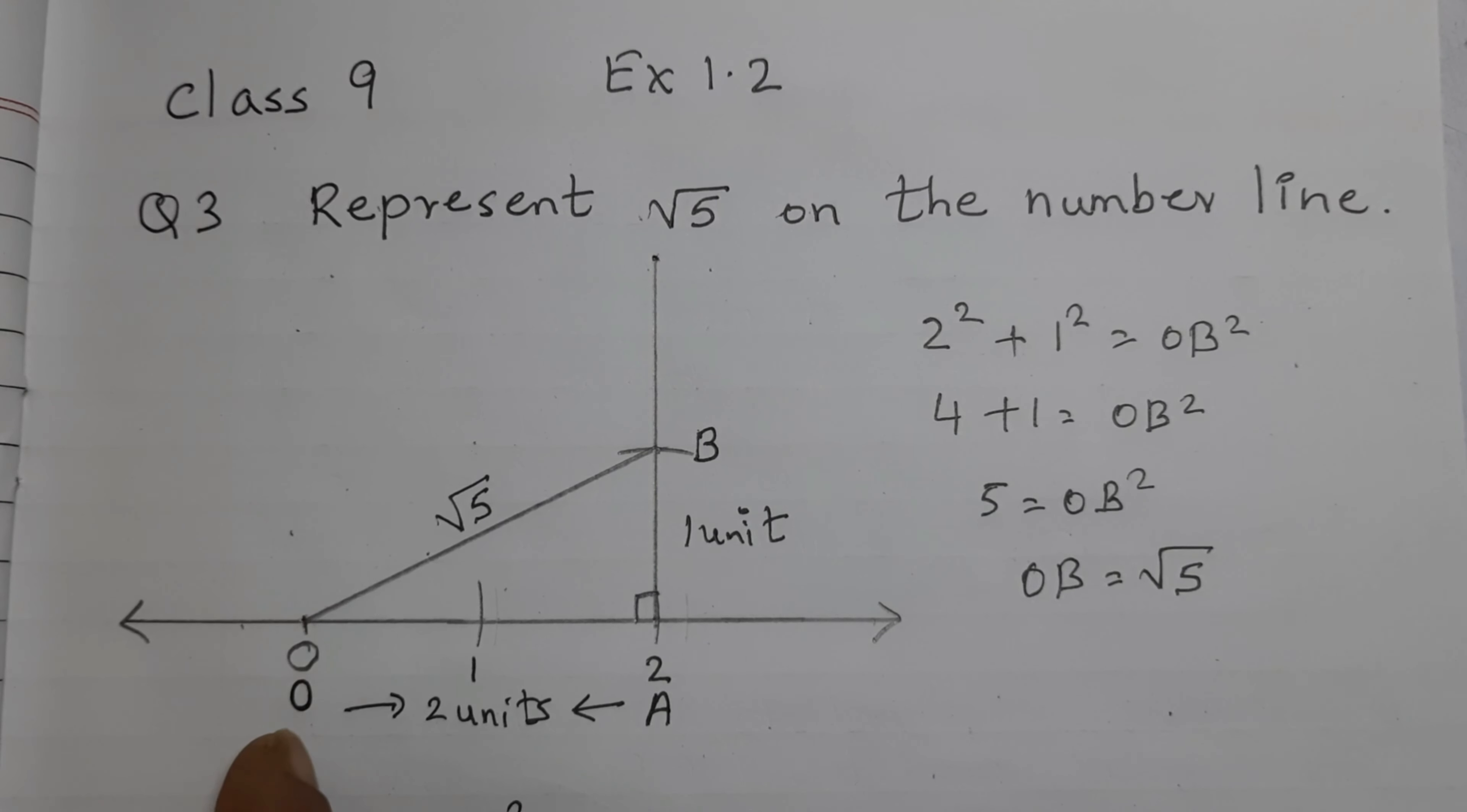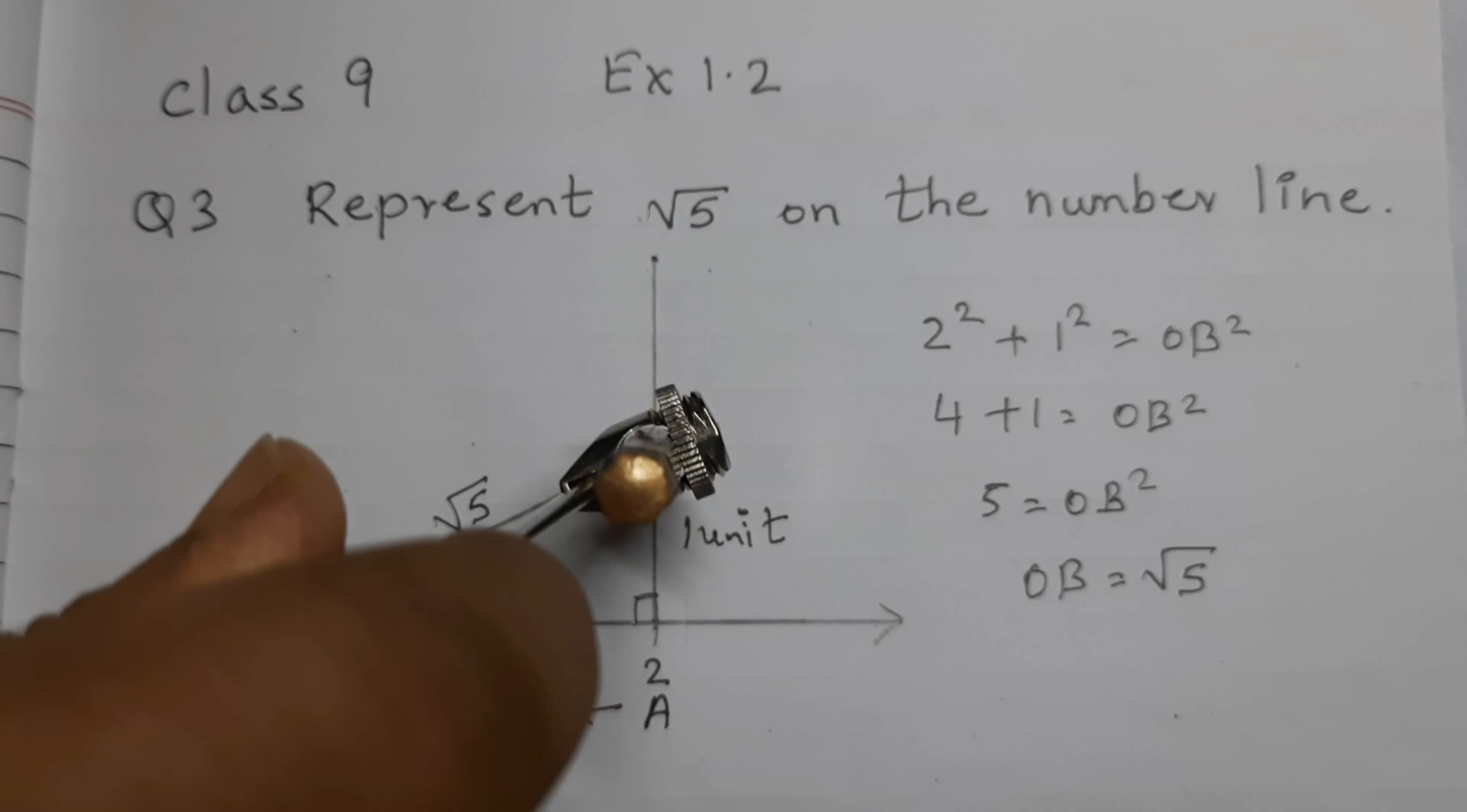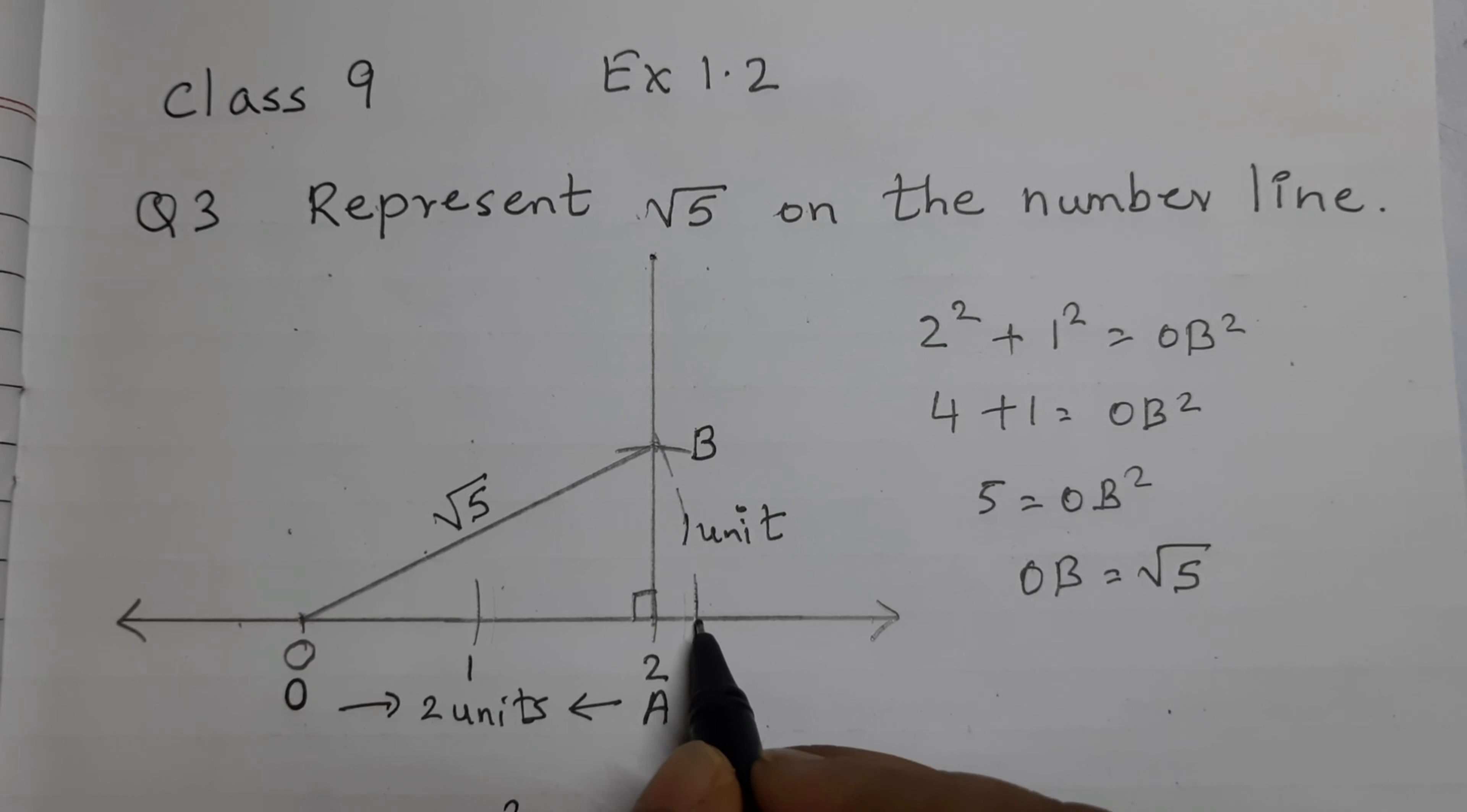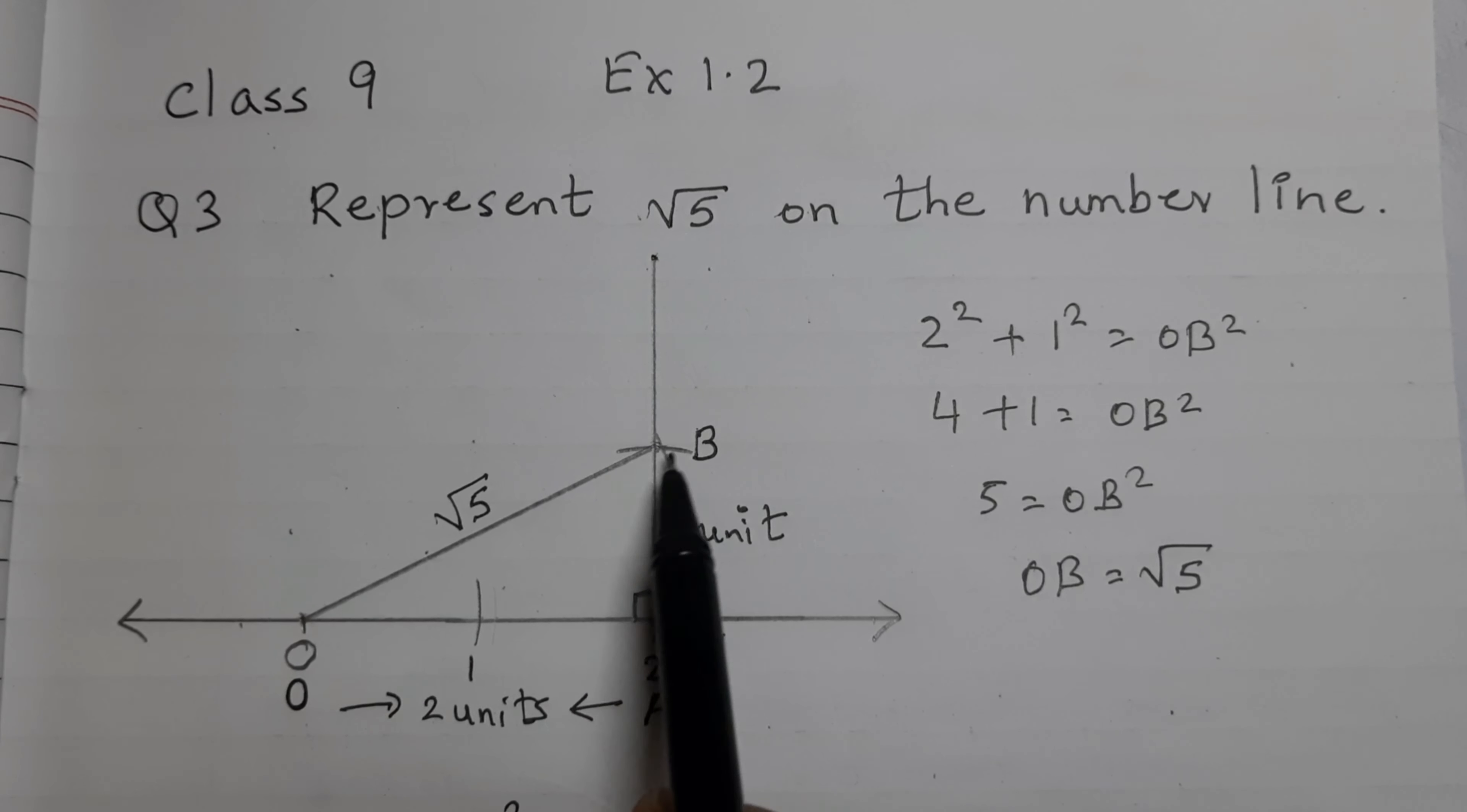Taking O as the center and O, B as the radius, draw an arc to cut the number line at C. This point here is C, square root of 5. C represents square root of 5 on the number line. If you take this as the radius, O, B as the radius and same radius we are drawing here. So O, C is also square root of 5.